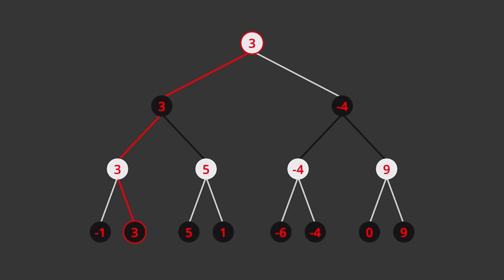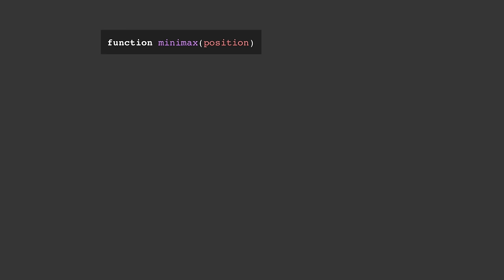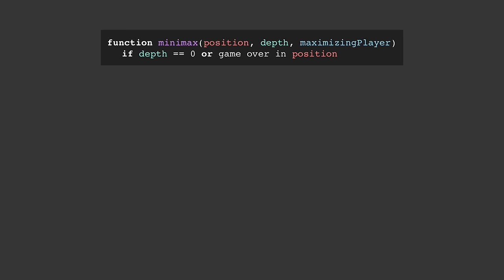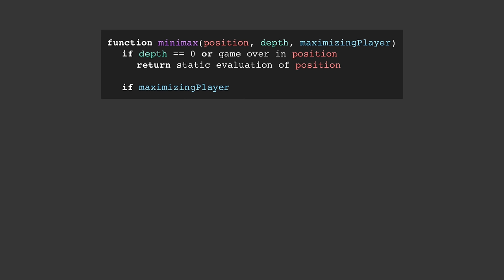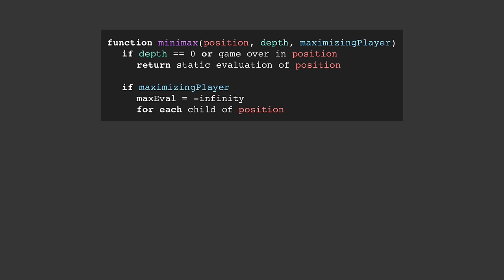So now that the basic idea is hopefully clear, let's look at how this is implemented in code. We have a function called minimax, which takes in the current position, a depth for how many moves ahead we want to search, and a bool called maximizing player. We begin by checking if depth is equal to 0, or if the game is over in the current position, in which case we return the static evaluation of that position. Otherwise, if it's currently the turn of the maximizing player — which in our example means it's white to move — then we want to find the highest evaluation that can be obtained from this position. So we create a variable called maxEvaluation and initialize that to negative infinity. We then loop through all the children of the current position — by children I just mean the positions that can be reached in a single move. To find the evaluation of each child, we make a recursive call to the minimax function, passing in the child, depth minus 1, and false,